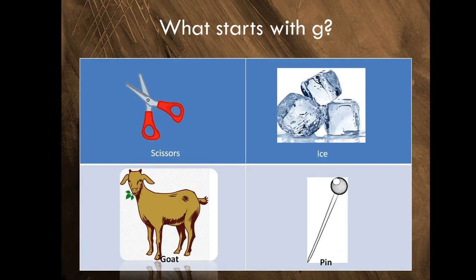Here's another one. Scissors, ice, goat, pin. Listen to the sounds that begin these words. Scissors, ice, goat, pin. What picture starts with G?